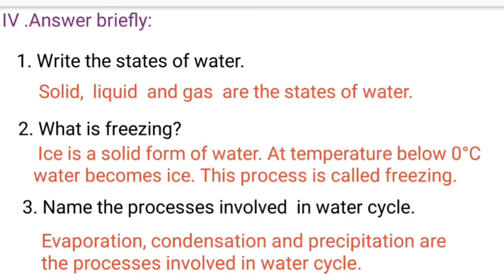Condensation and precipitation are the processes involved in the water cycle. Evaporation means converting water to vapor, condensation means the vapor cooling and shrinking, and precipitation means rainwater falling. These three are the processes involved in the water cycle.